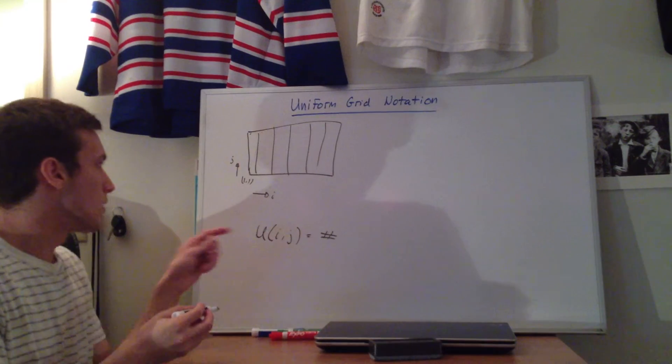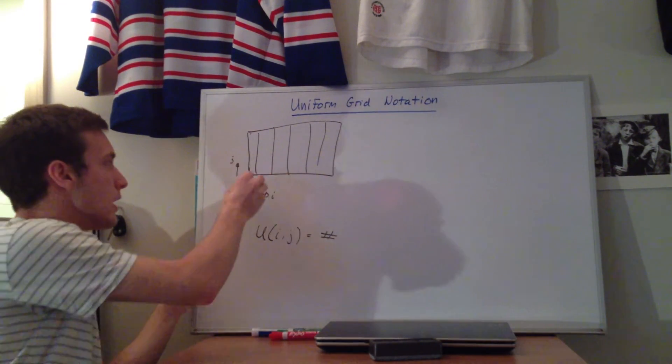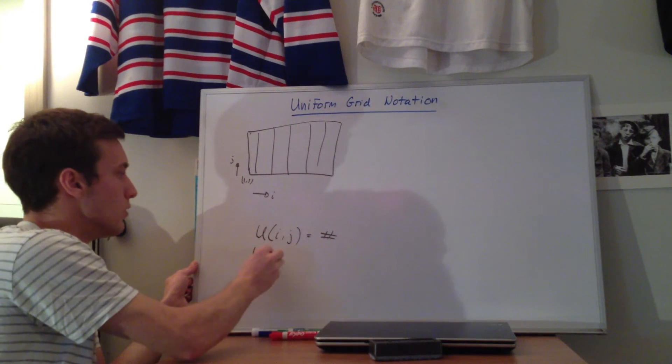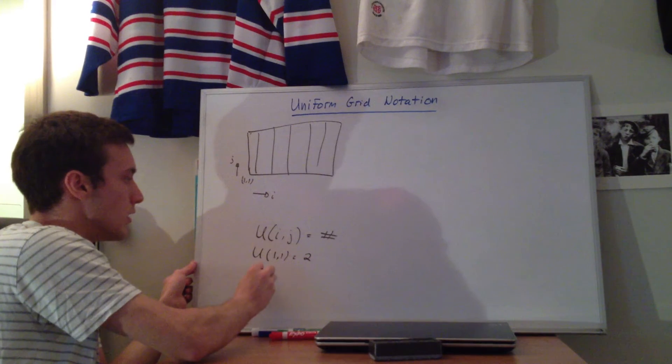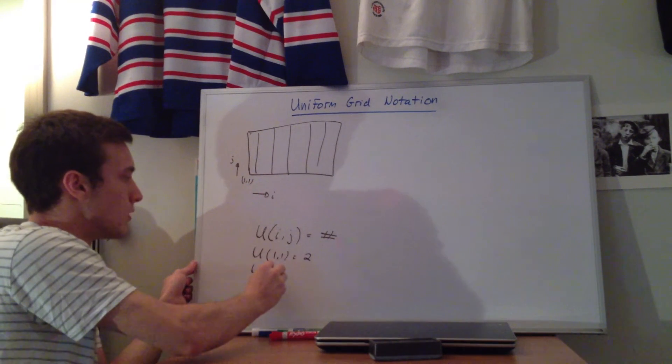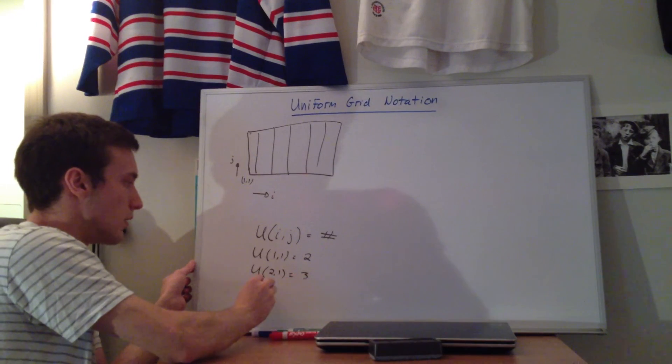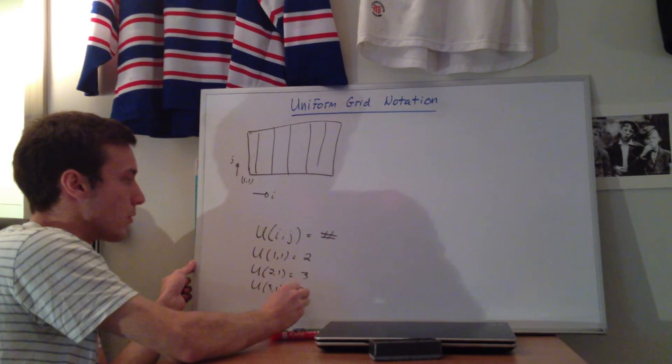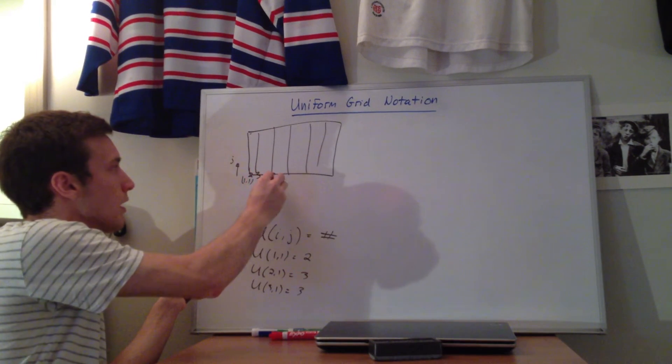So if you want to describe all the bottom boundary numbers here, you would say my u, 1, 1 is equal to, you know, 2. My u, and then I'm going to be moving out in the j's, would be 2, 1 is equal to 3. And my u, 3, 1 is equal to 3. Like, that would specify this value here, 2, 3, 3.